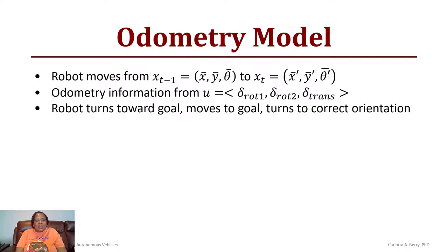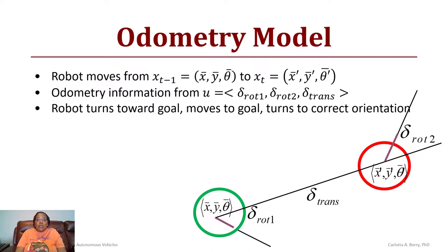The odometry model: the robot is going to move from an initial state x_t minus one denoted by x bar, y bar, theta bar to a final state x_t denoted by x bar prime, y bar prime, theta bar prime. The odometry information will be given to the robot in terms of two rotations and a translation where we're assuming that the robot needs to initially rotate towards the goal, then it needs to translate to the goal, and then we need a second rotation to put the robot in the correct orientation once it arrives there. So it moves towards the goal, turns towards the goal, moves to the goal, and then turns to correct its orientation. The green represents the starting position for the robot and the red represents the final position for the robot.